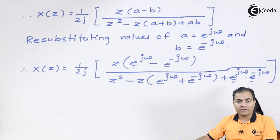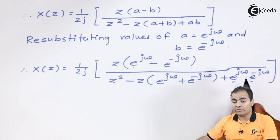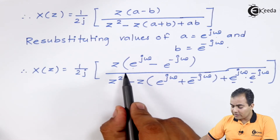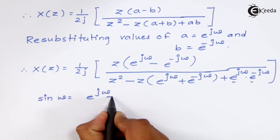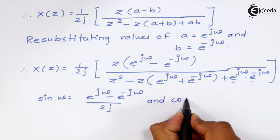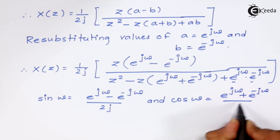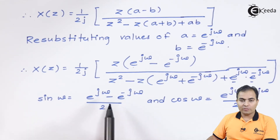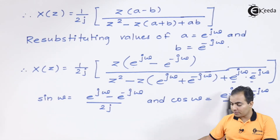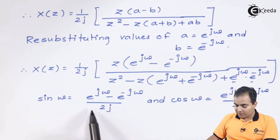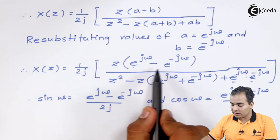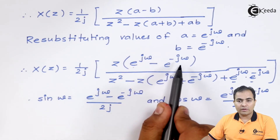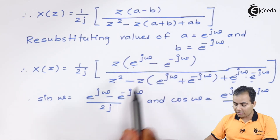Here the bases are the same, so the exponents get added: jω + (−jω) = 0, and e^0 = 1. Now, the numerator e^(jω) − e^(−jω) is nothing but 2j·sin(ω), because the sine formula gives 2j·sin(ω) = e^(jω) − e^(−jω). Similarly, in the denominator, e^(jω) + e^(−jω) equals 2·cos(ω), so that part is replaced by 2·cos(ω). The 2j terms in numerator and denominator cancel.